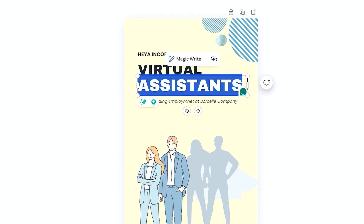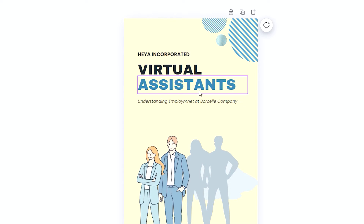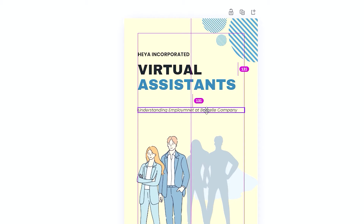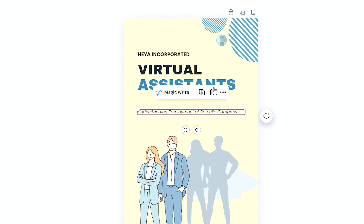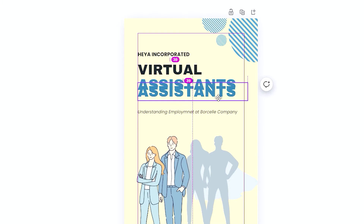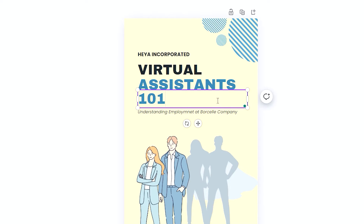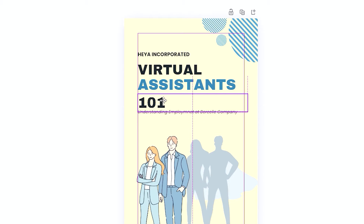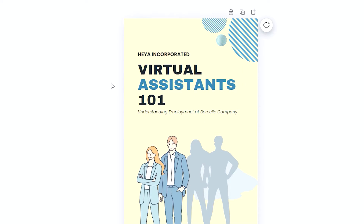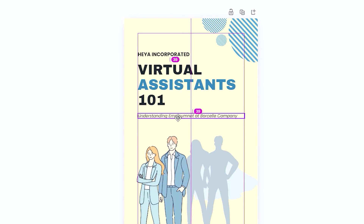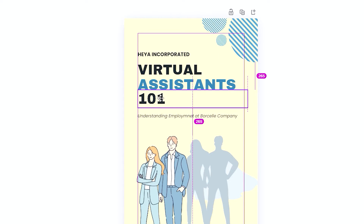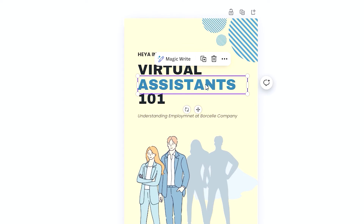I'll lower the font size to match the top text, then drag the element down. I'll copy the text and call this 'Virtual Assistant 101,' then change the color to black so there's a rhythm to it — alternating colors makes it look balanced.